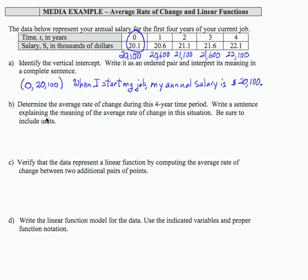For part B, determine the average rate of change during the four year time period. Well average rate of change, I'm going to denote that as AROC. In this case, that's going to be change in S, that's change in salary, change in output divided by change in time, change in input.